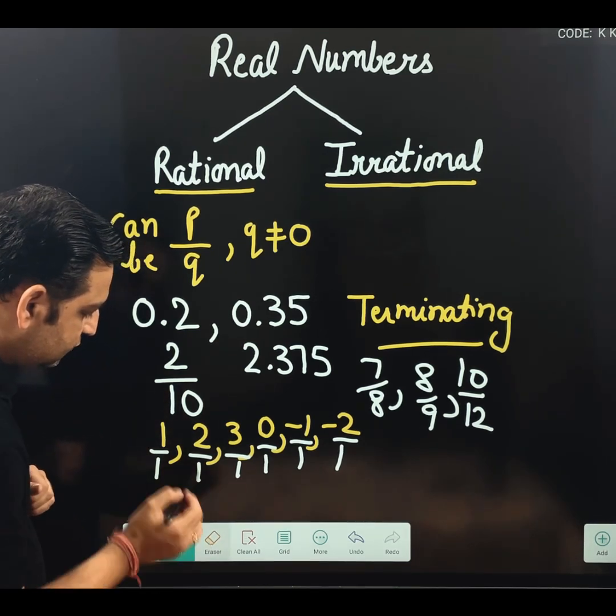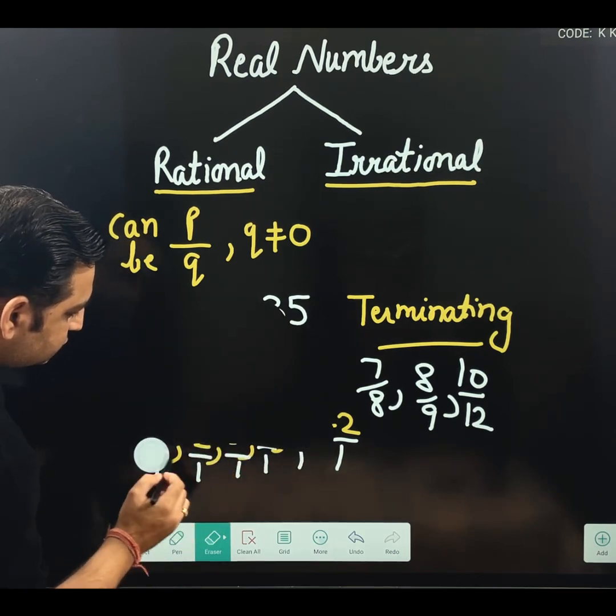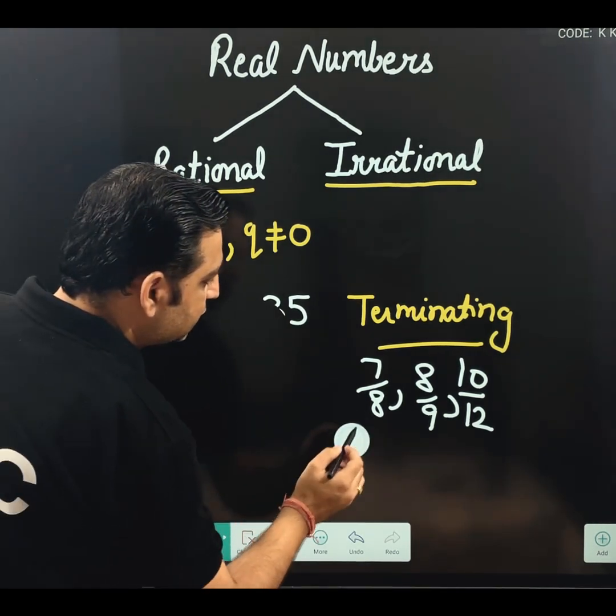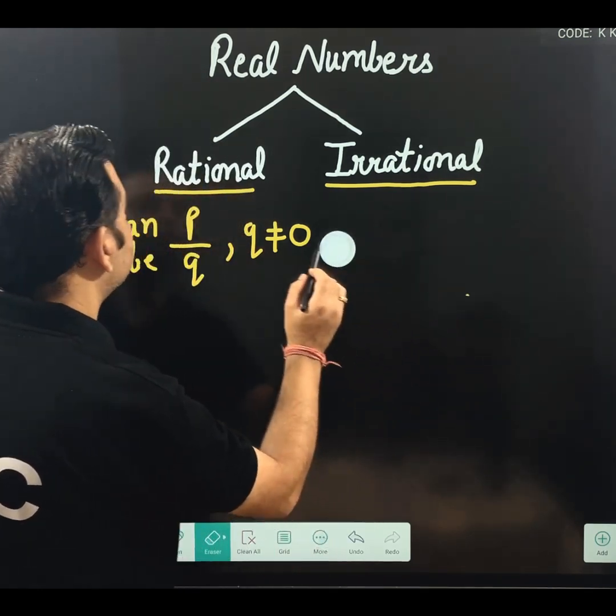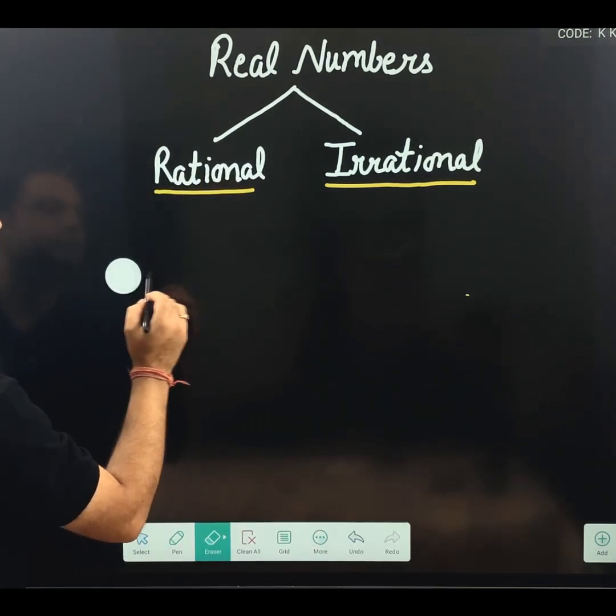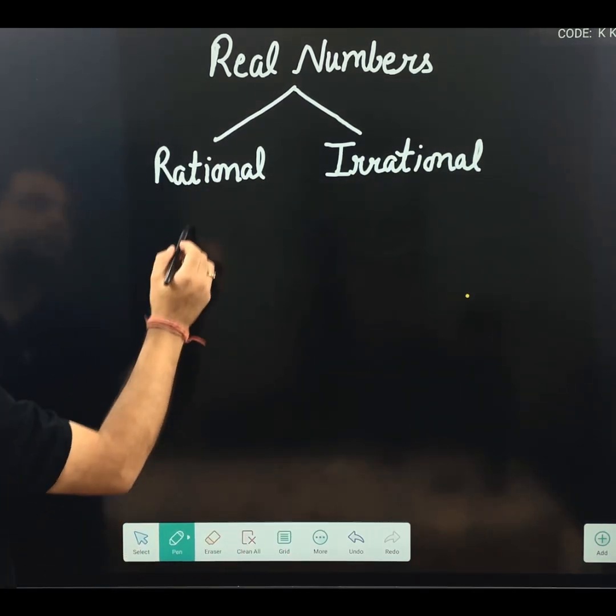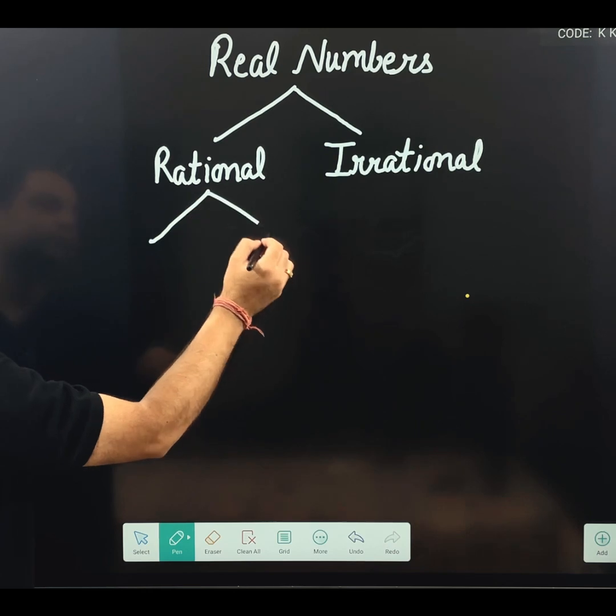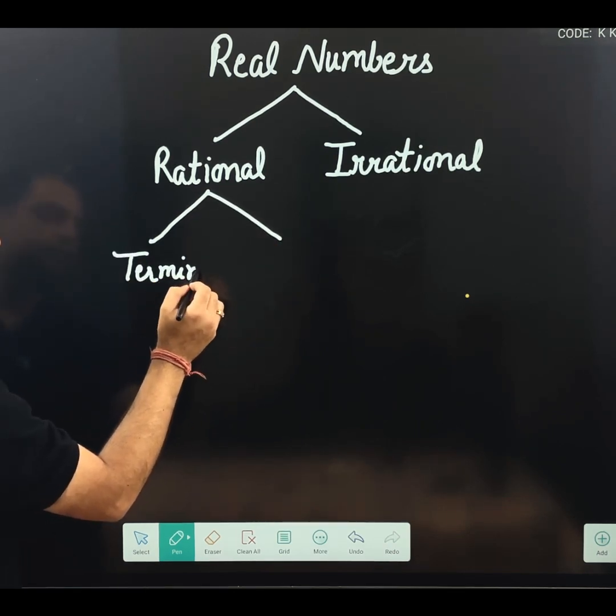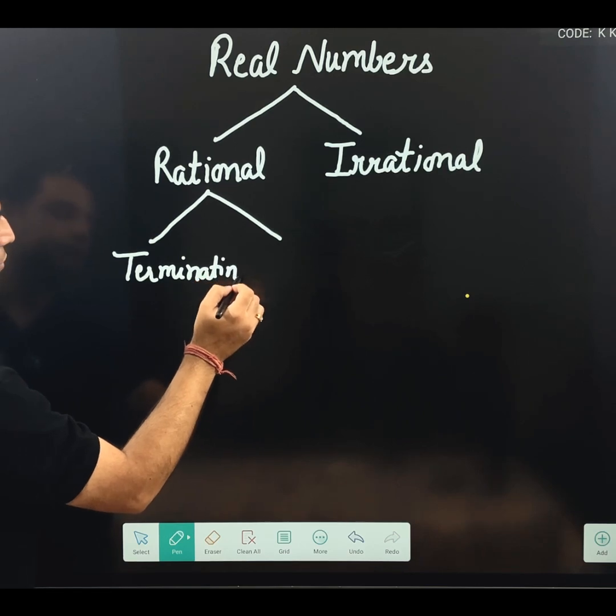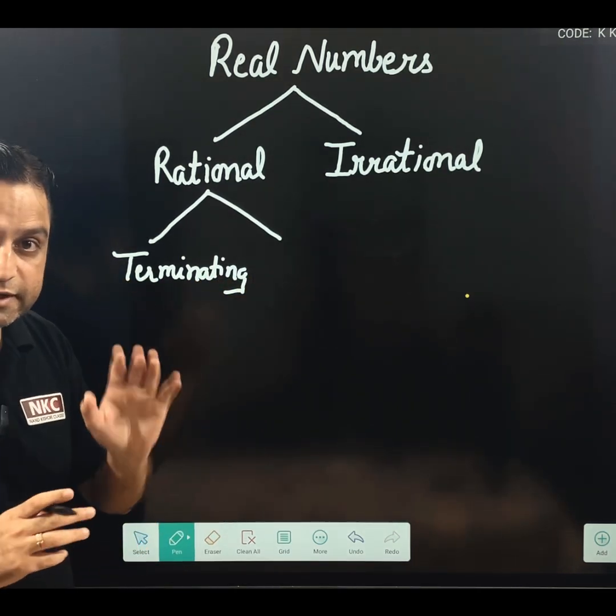Now, let me clean the board once. Whatever is written here, I hope you are clear. Now, I am coming to this terminating part. Because, when I say rational and irrational, for rational, two options will be there further. One will be terminating.